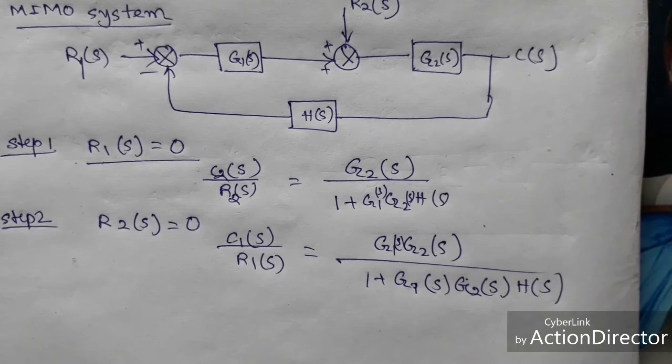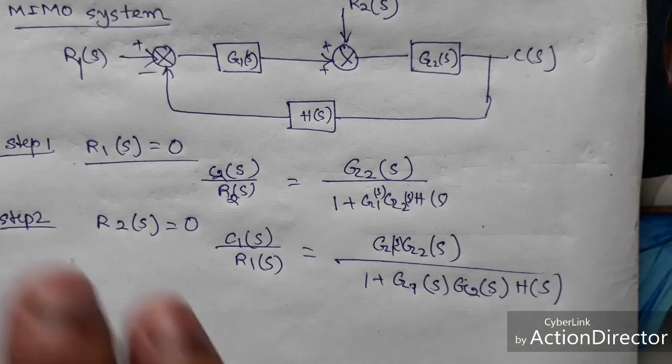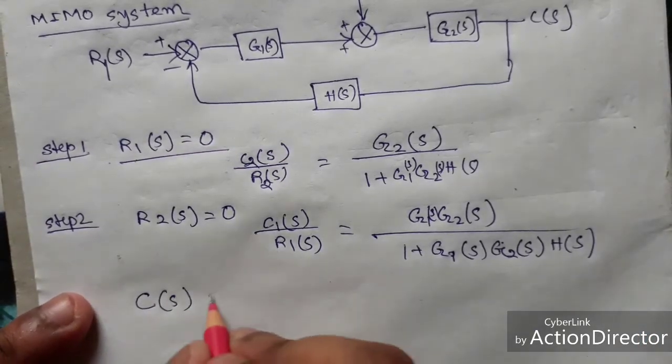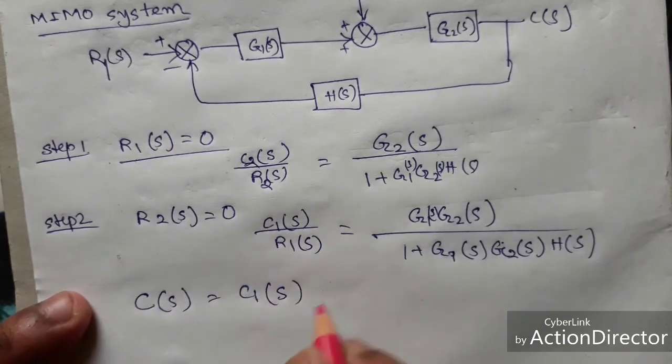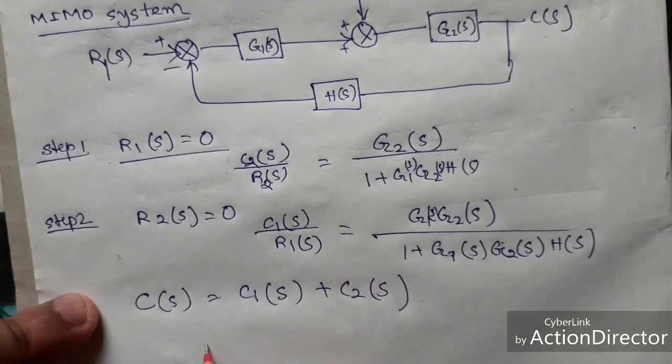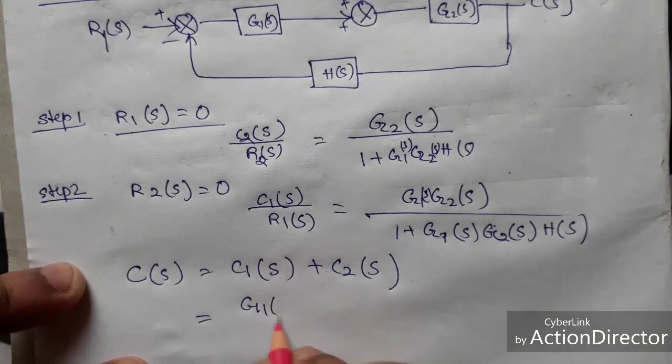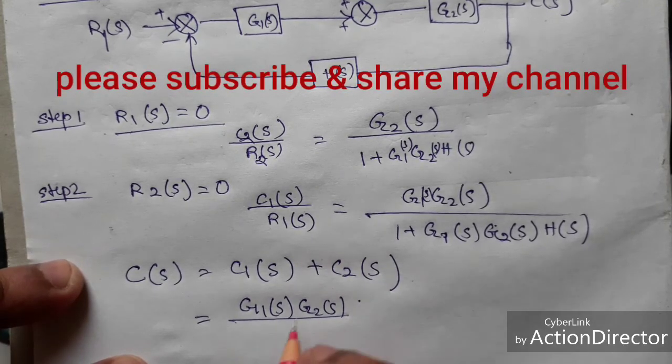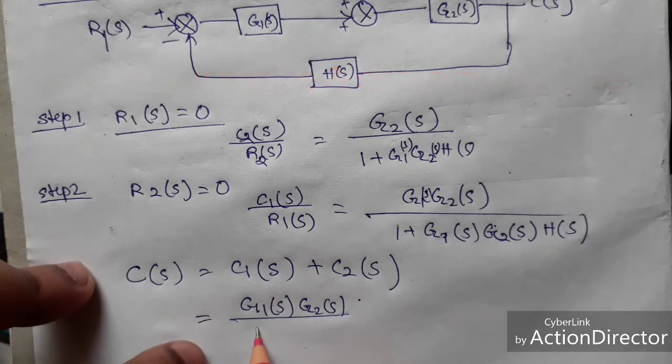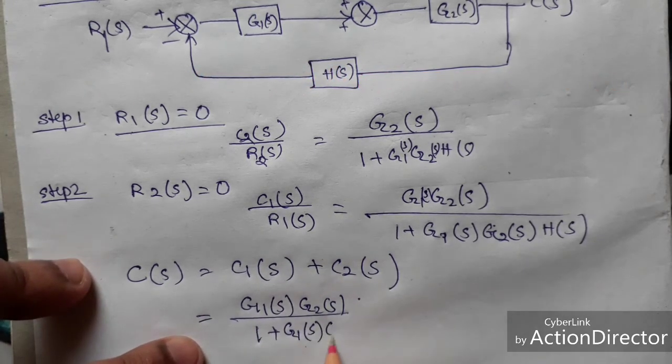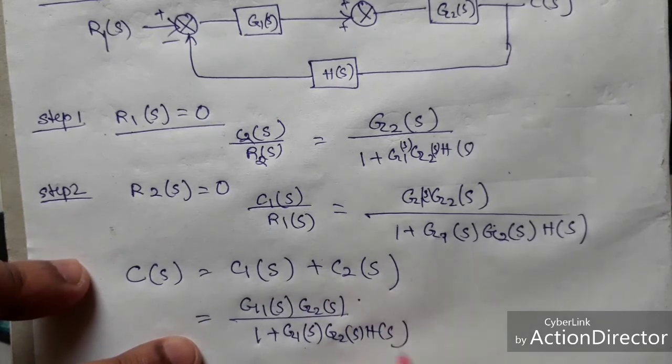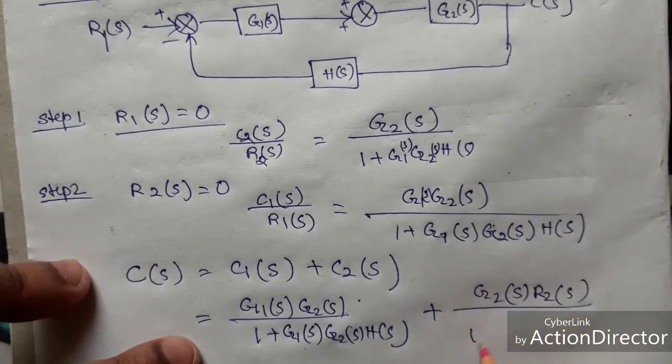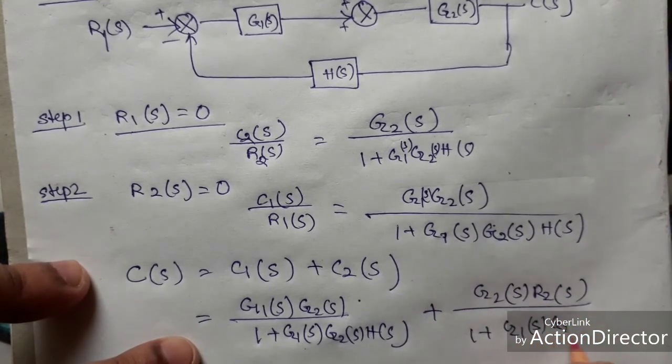So when we write what is the output, the output will be sum of the two output means C(S) will be written as C1(S) plus C2(S). So C1(S) will be G1(S) G2(S) divided by 1 plus G1(S) G2(S) into H(S) plus C2(S) will be G2(S) R2(S) divided by 1 plus G1(S) G2(S) into H(S).